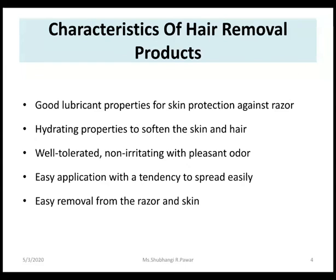When formulating hair removal products, you have to consider some qualities or characteristics. First, good lubricant properties for skin protection against a razor. Second, hydrating properties to soften the skin and hair. It should be well tolerated, non-irritating, and contain a pleasant odour. It should be easily applicable with a tendency to spread easily. And lastly, easy removal from the razor and skin. There are also properties related to appropriate pH and dermatological effects. Considering all these characteristics, you have to formulate the hair removal products.